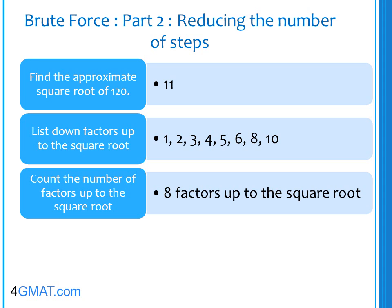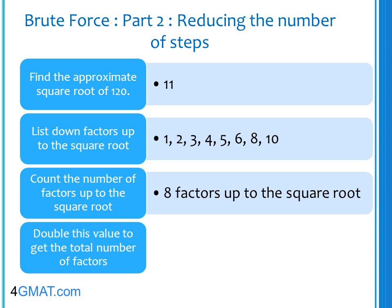The last step is where we find the answer. If a number has 8 factors up to its square root, it will have 8 more factors between its square root and the number itself. So if 120 has 8 factors up to the square root, 120 will have a total of 16 factors — simply double the number of factors found up to the square root. This method works as long as the number is not a perfect square; for a number like 36, the method needs a slight alteration — try it out.